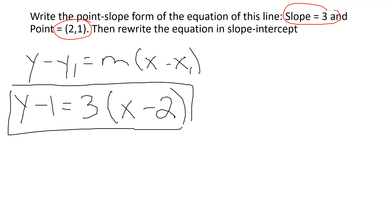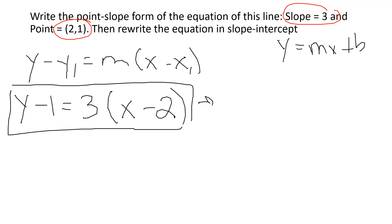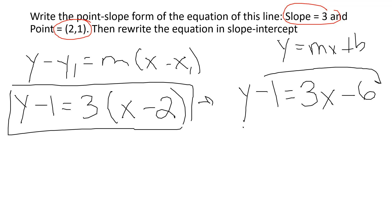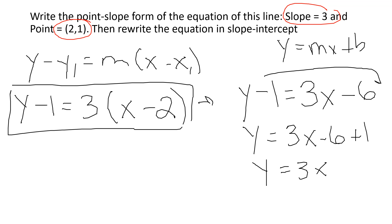Now we just need to rewrite this into slope intercept form. Remember slope intercept is y equals mx plus b, so I'm going to take this and solve for y. My first step is to distribute the three in: y minus one equals three x minus six — that's three times two. Distribute that three to both pieces. Now I need to move my minus one over — when I move a minus one, the operation changes and becomes plus. Negative six plus one is negative five. And this is my slope intercept form.